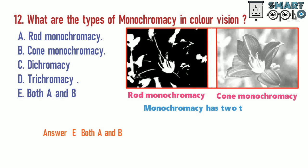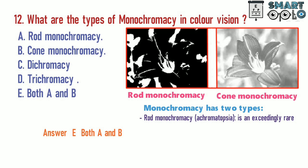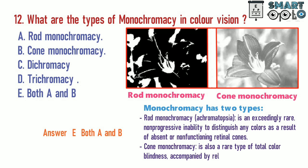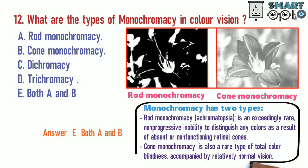Monochromacy has two types. Rod monochromacy, or achromatopsia, is an exceedingly rare, non-progressive inability to distinguish any colors, as a result of absence or non-functional retinal cones. Cone monochromacy is also a rare type of total color blindness accompanied by relatively normal vision.